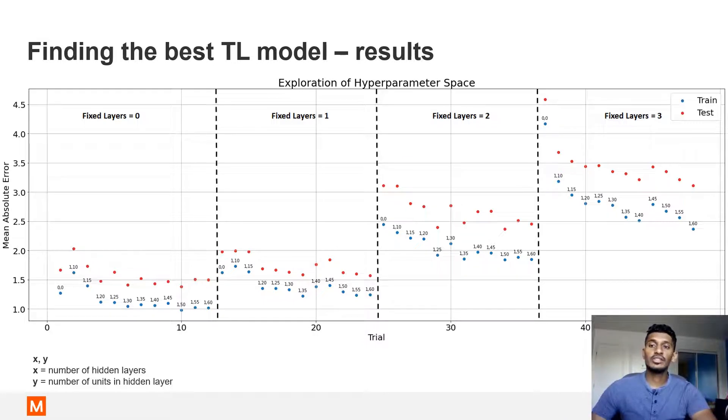The transfer learning exploration step produced 48 configurations. This plot consists of four sections indicating how many layers were frozen. Each section displays the mean absolute error for varying combinations of added layers and added units to these layers. The first number at each point represents the number of added layers, and the second number represents the number of units per added layer. For example, 2, 45 characterizes a neural network configuration with two added layers and 45 units per added layer. Note that no units are added to the fixed layers.